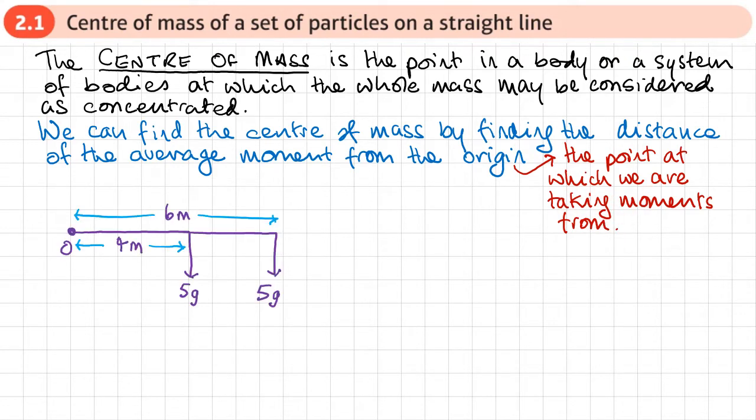So here's a very simple example just to illustrate that. This is the point I'm going to be taking moments from, the origin. And I've got two masses here, both the same at distances of four metres from the origin and six metres from the origin. You could reason from this diagram that the average moment would be five metres from the origin. It makes sense because both the masses are the same weights, so the average moment should be halfway in between the two.